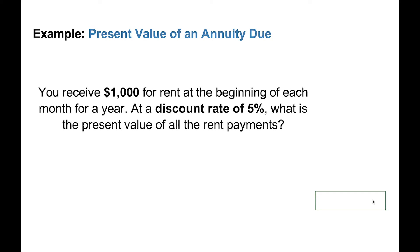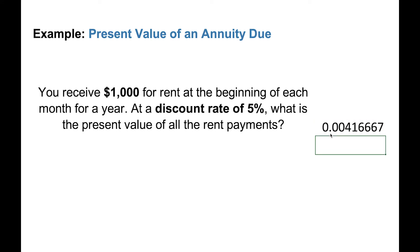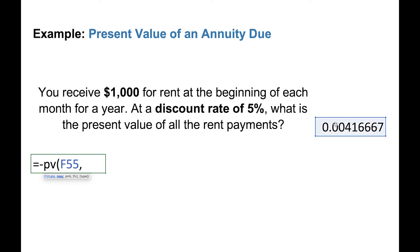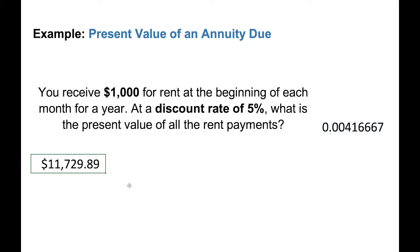Now let's do a calculation for the present value of an annuity due, which means the payment happens at the beginning of the period. So let's say you are a landlord who receives $1,000 for rent at the beginning of each month for a year. At a discount rate of 5%, what is the present value of the rent payments? Since we're getting the payment every month, compounding happens monthly — 12 times a year. The 5% is the annual rate, so we divide it by 12 to get the monthly rate. In Excel, the rate is 5% divided by 12, the number of periods is 12, the payment is $1,000, the future value is zero, and for the type we put a one for annuity due. This gives us the present value of those $1,000 monthly rent payments at the beginning of each period.